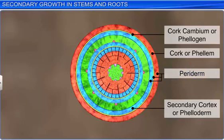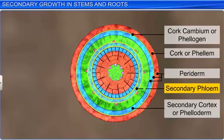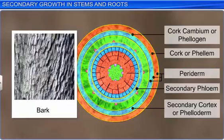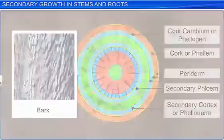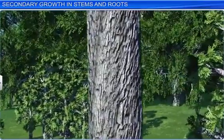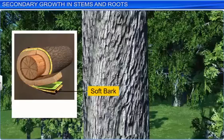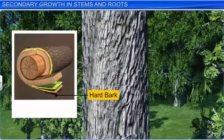Tissues outside the vascular cambium, which includes the secondary phloem and periderm, are typically known as bark. Bark forms the outermost layer of the stem and roots of woody plants. Bark formed in the early season is called early or soft bark, while bark formed at the end of the season is called late or hard bark.